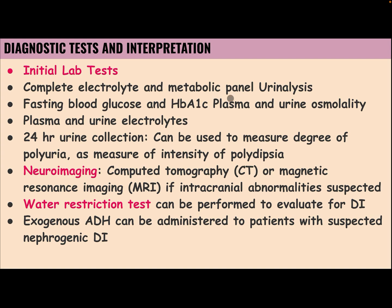Initial lab tests include a complete electrolyte and metabolic panel, urinalysis, fasting blood glucose, hemoglobin A1C, and plasma and urine osmolality and electrolytes. A 24-hour urine collection can be used to measure the degree of polyuria as a measure of intensity of polydipsia. Neuroimaging with CT or MRI is indicated if intracranial abnormalities are suspected. A water restriction test can be performed to evaluate for diabetes insipidus, and exogenous antidiuretic hormone can be administered to patients with suspected nephrogenic diabetes insipidus.